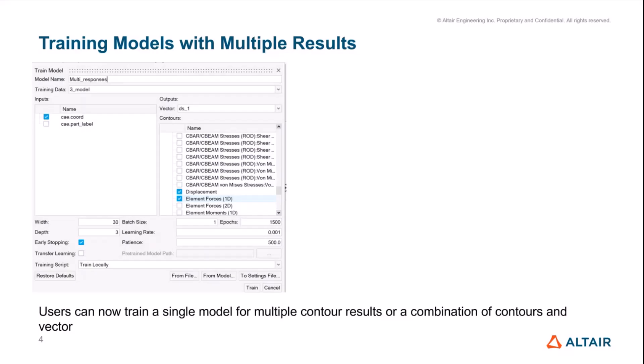One of the major improvements coming in version 2024.1 is training models with multiple result types. Earlier, if you recall, we could only train a single model for displacement or stresses, so one would need multiple models to predict different results. Starting with 24.1, we have the ability to train a single model for multiple result types.